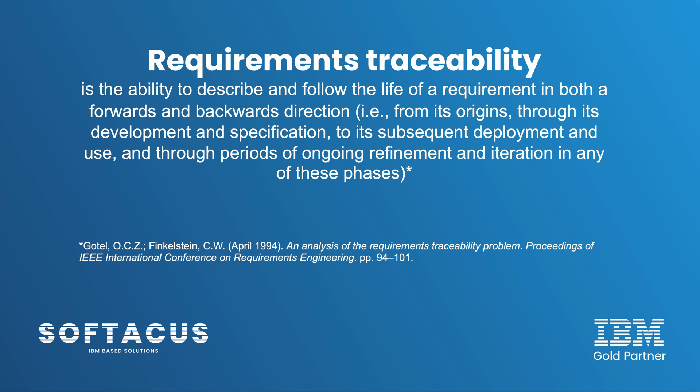Let's now talk about traceability — the magic word that always pops up, not just with requirements, but every time you talk about engineering lifecycle management. Requirements traceability refers to the ability to describe and follow the life of a requirement in both forward and backward directions — from its origins, through its development and specification, to its subsequent deployment and use, and throughout all periods of ongoing refinement and iteration. If you are just starting with systems engineering, there is a hierarchy not only in development phases, but also in requirements: vision at the highest level, then stakeholder requirements, user requirements, system requirements, and multiple levels of subsystem requirements.